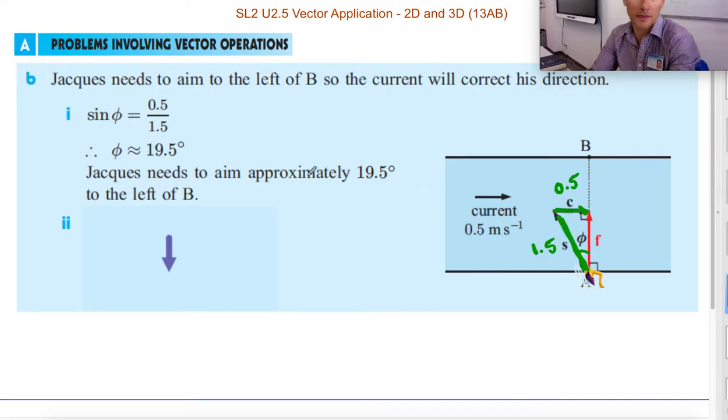And those are the two that we're sure about. They've given us those. So sine is opposite over hypotenuse. Take the inverse sine to get about 20 degrees. So Jacques could point about 19.5 degrees upstream away from perpendicular across.